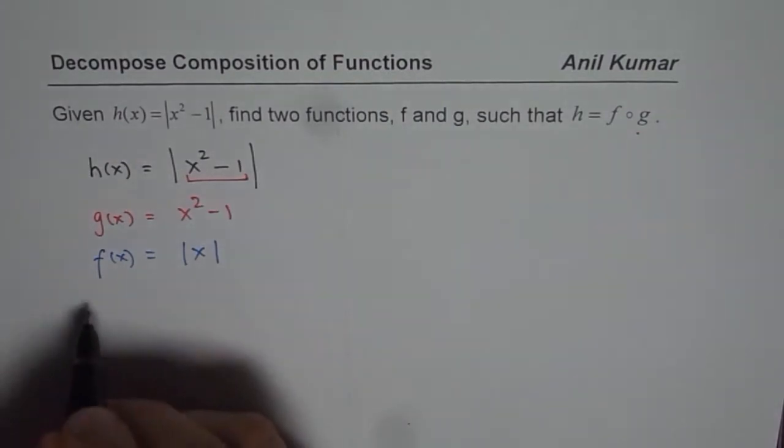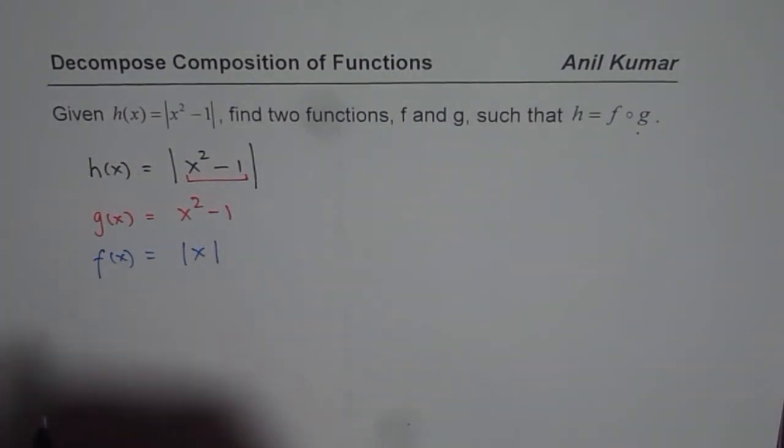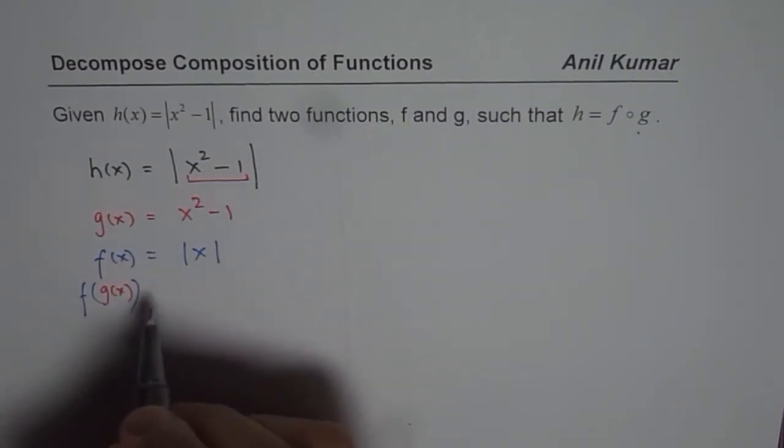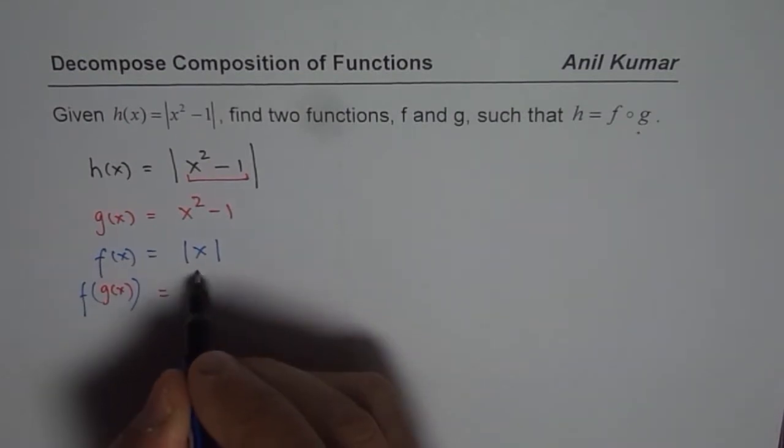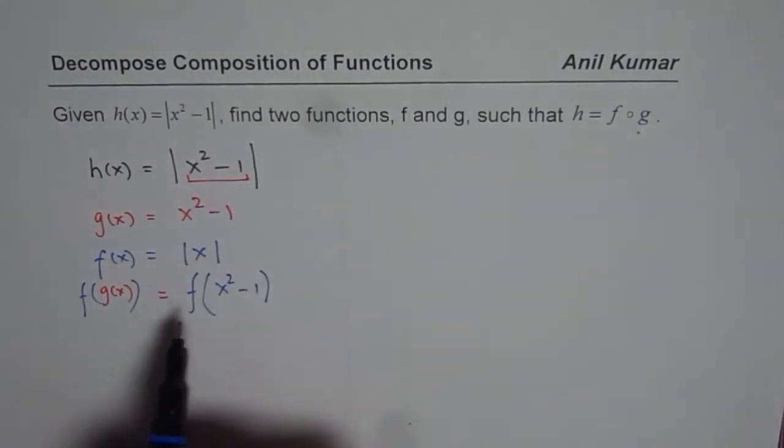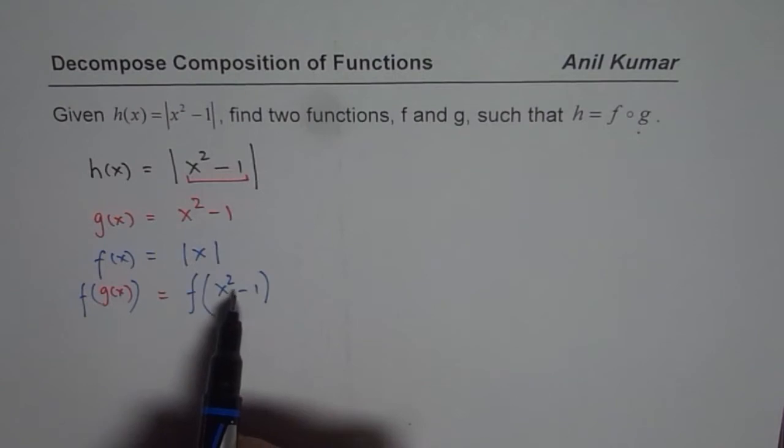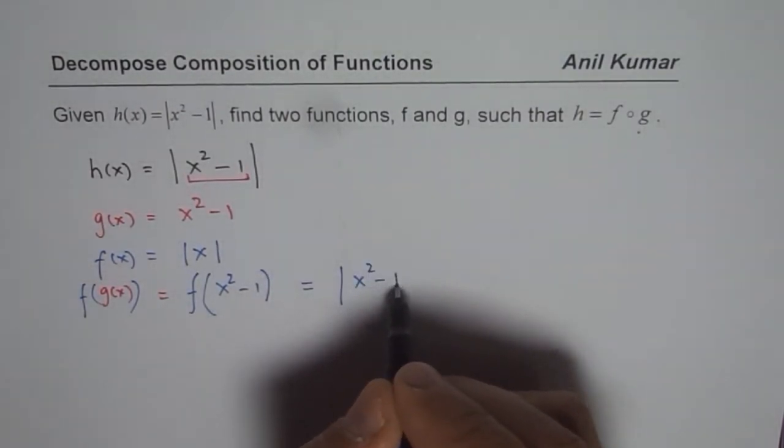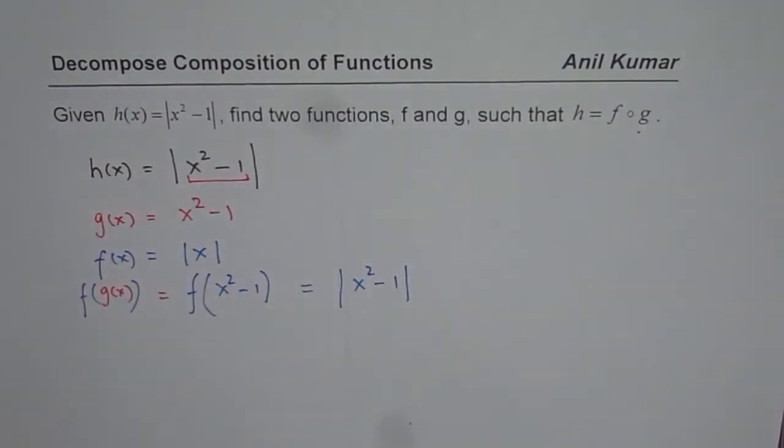So in that case, what do we have for, let us say, let me write like this. f of g of x, it is equal to f of g of x is x square minus 1. And if I substitute x square minus 1 in absolute x, I get my function, which is absolute value of x square minus 1. So that is one way of doing it.